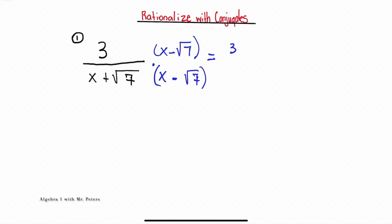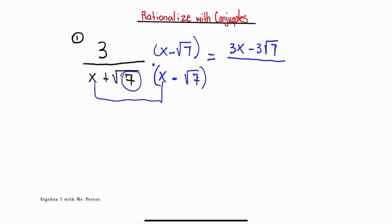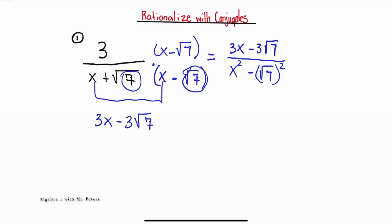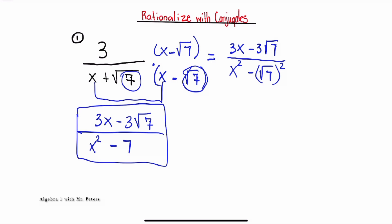In the top, when we distribute 3, we're going to have 3x minus 3 times radical 7. In the bottom of the fraction, we're only going to multiply the first two terms and then the last two terms because we know the middle terms cancel out. So we're left with x squared minus radical 7 squared. When we simplify one step further, our numerator stays the same, but in the denominator, anytime we square a radical it's just a number without the radical.